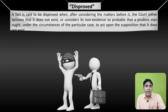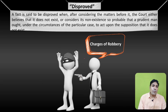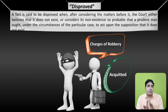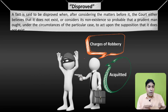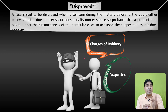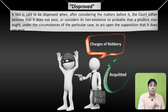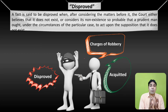A fact disproved kahlayega — suppose there are charges of robbery labeled against a person. He has been acquitted by a competent court of law from the charges of robbery. Court ne case chalaane ke baad is person ko robbery ke charges se acquit kiya, bari kiya. Agar uske against mein charges prove hote to usko conviction hota. Yahan par acquittal isliye hua kyunki prosecution uske against mein charges prove nahi kar saka. Whenever the order of acquittal is passed by the court, it means that fact has been disproved.